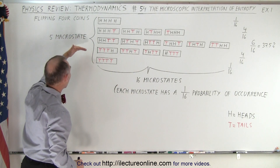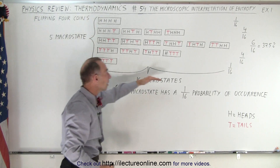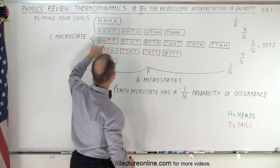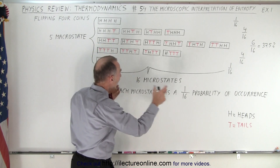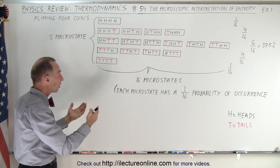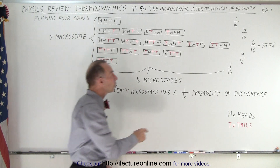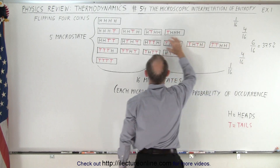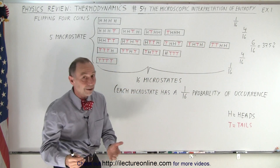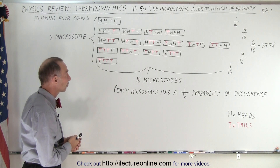So we have five macro states and 16 micro states in total. The most likely scenario would be that we have two heads and two tails, and we have different arrangements. The total number of micro states being 16, six of those could be the situation where we have two heads and two tails, which represents 37.5 percent of the probability of all the various micro states.